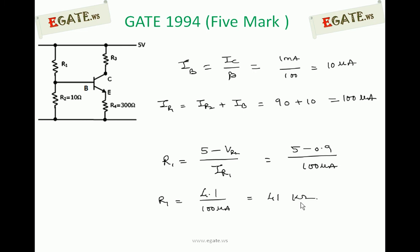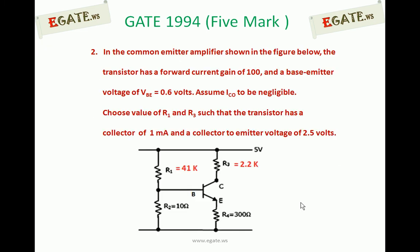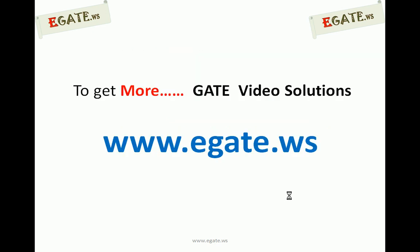So R1 value is 41 kilo ohms, R3 value is 2.2 kilo ohms. This is the required answer. Thank you.